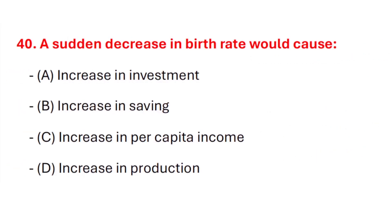Question 41. A sudden decrease in birth rate would cause? Correct answer is option C: Increase in per capita income.